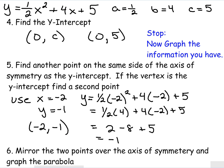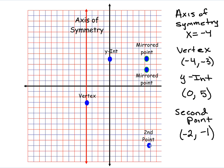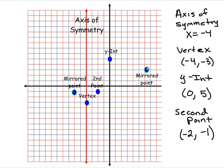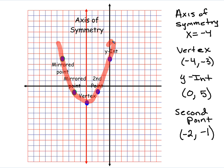Going back to the graph, we plot the second point at negative 2, negative 1. Now we have a vertex, our second point, and our y-intercept. The last step is to mirror those points over the axis of symmetry to get the entire curve. The second point is 2 units from the axis, so we mirror it 2 units to the other side. The y-intercept is 4 units away, so we mirror it 4 units over. Now we have our parabola — we connect the dots, and we have graphed a quadratic equation in standard form.